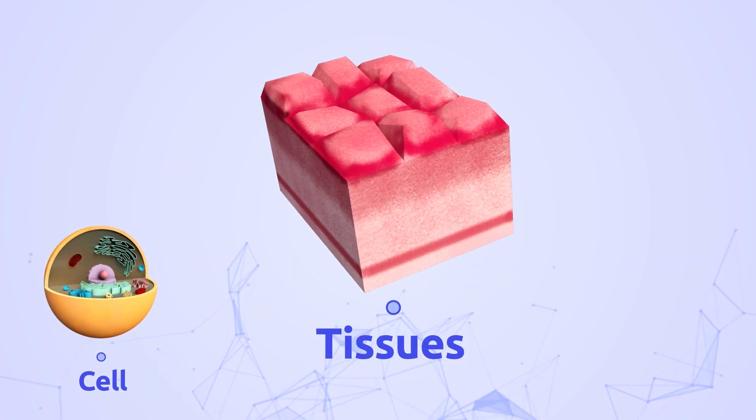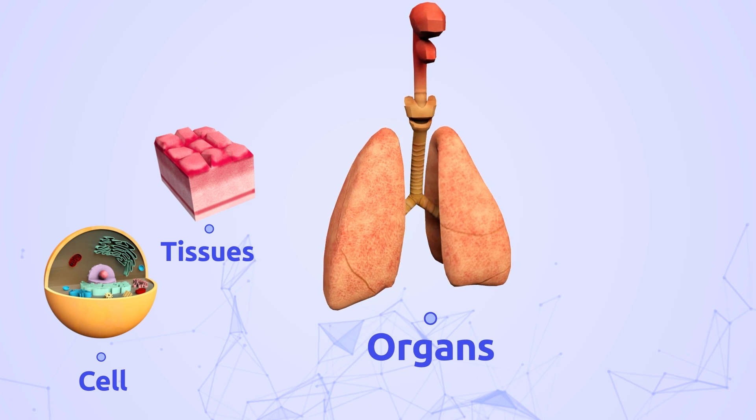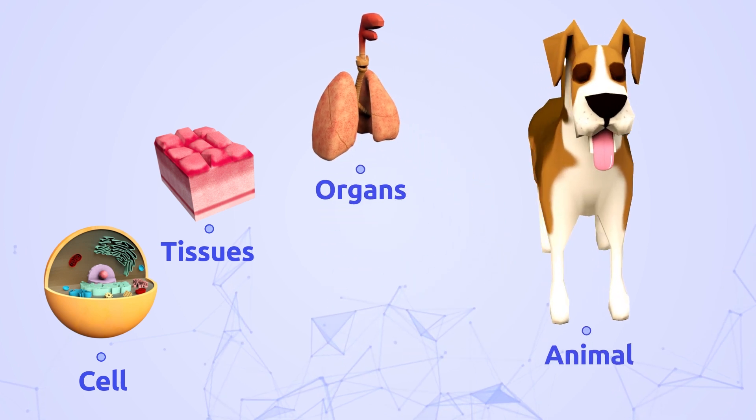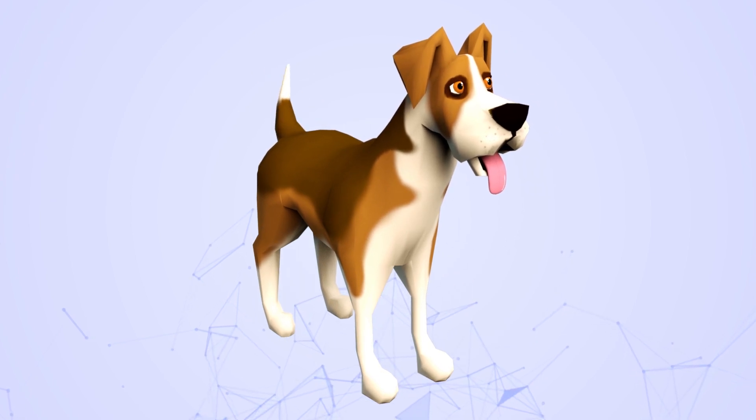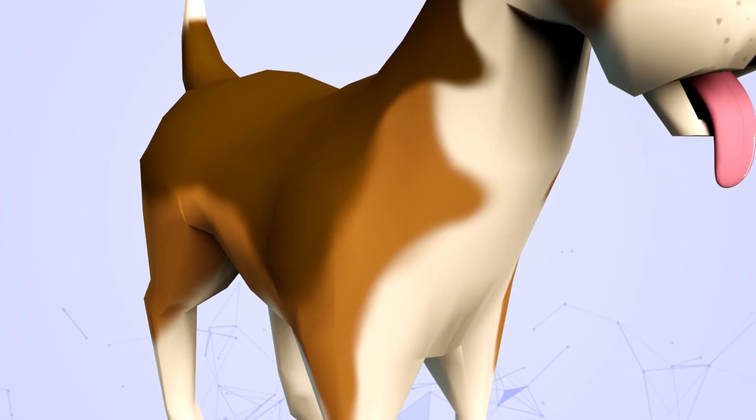Animal cells make up tissues, and these make up animal and human body organs. Each cell has a specific function, depending on which organ system it belongs to.